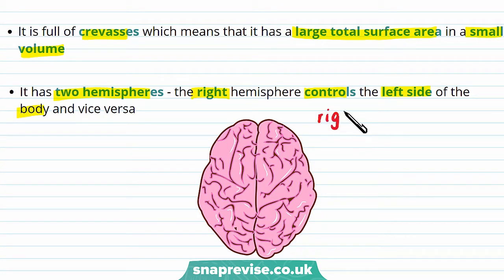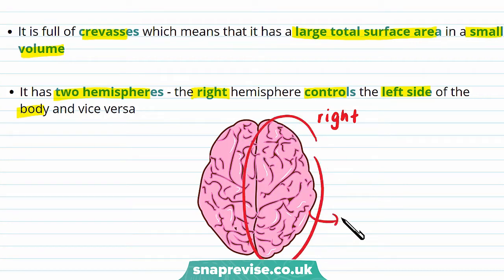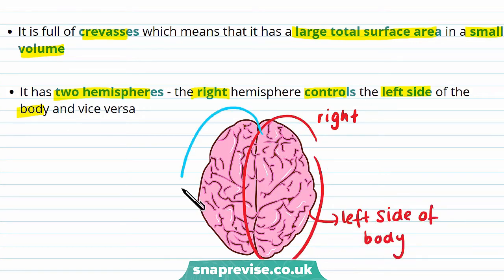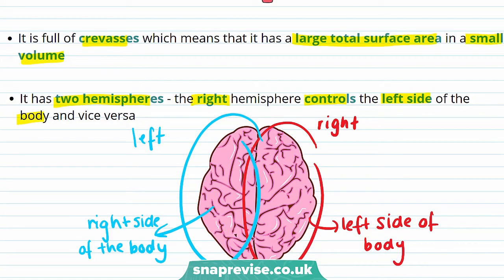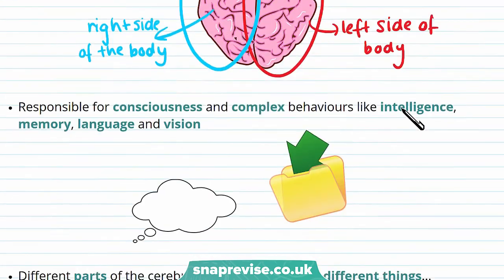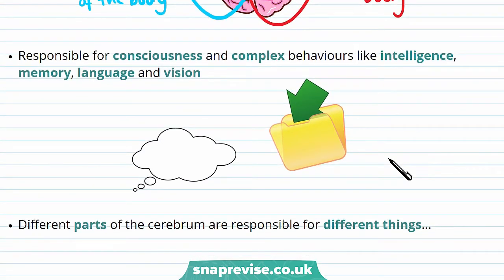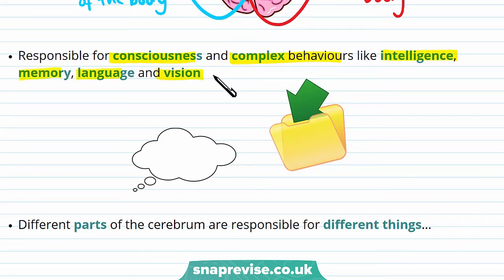The cerebrum also has two hemispheres. The right hemisphere controls the left side of the body — so in this diagram, this part of the brain controls the left side of the body — and the left side of the brain controls the right side of the body. This part of the brain is really important because it's responsible for consciousness and complex behaviors like intelligence, memory, language, and vision. Different parts of the cerebrum are responsible for different things.